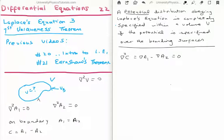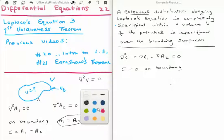Okay. Now what do we know? We know that C is equal to zero on the boundary. Why is C equal to zero on the boundary? Because on the boundary, A1 is equal to A2. That's why. Okay. So C is equal to zero on the boundary.